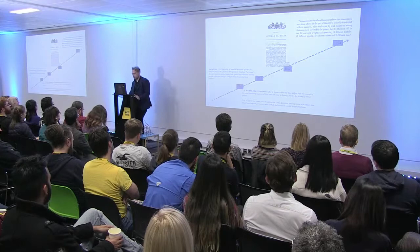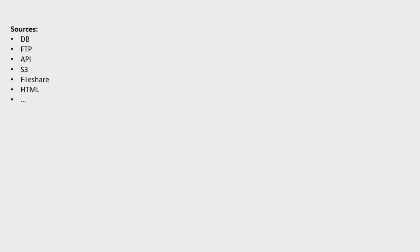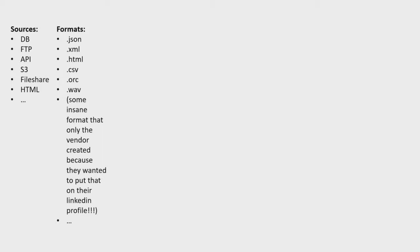This is really the data engineer's problem — very similar. Data comes from a variety of different sources: databases, FTP sites, APIs, file shares, HTML for web scraping. The formats might be JSON, XML, HTML, CSV, ORC, WAV, and more. There may also be many different compression algorithms: .zip, .tar.gz, .gz. Using .gz in a distributed system is very good, but .zip and .tar.gz can't be decompressed in Spark across distributed nodes — you'd have to move the data to one node. Data vendors give you data and it becomes a cross-cutting problem.